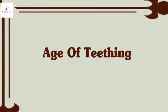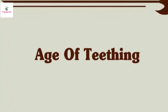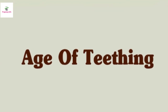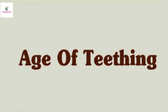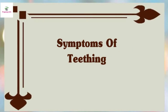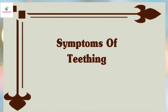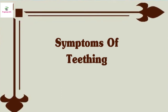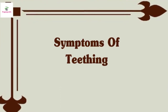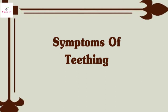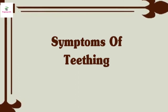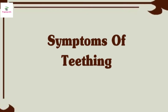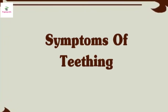Teething is the process by which the baby's teeth erupt. Teething generally occurs between 6 to 24 months of age. Symptoms of teething include irritability, tender and swollen gums, and an infant wanting to place objects or fingers into the mouth in an attempt to reduce discomfort. Fever, cough, diarrhea, and cold symptoms are not found when a child is teething.